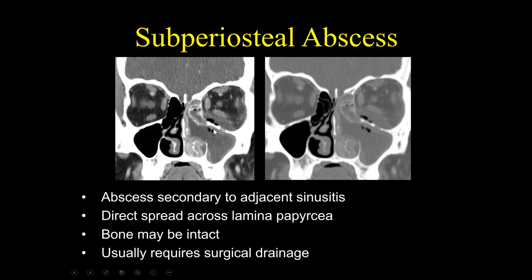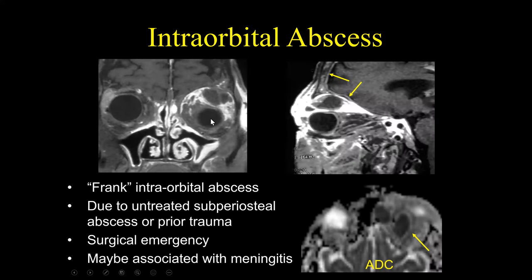This was a subperiosteal abscess arising from acute sinusitis of the maxillary sinus — a large subperiosteal abscess involving the floor of the left orbit, with air associated. If this continues to progress, it can develop into a frank intraorbital abscess — the fourth stage of the Chandler classification. We can almost see the three-globe sign: a globe on the right, a globe on the left, and a fluid collection in the superior orbit. An intraorbital abscess is due to untreated subperiosteal abscess or prior trauma and is a surgical emergency. ADC mapping shows decreased signal confirming the abscess, and sagittal T1 images show diffuse enhancement involving the meninges — this is an intraorbital abscess associated with meningitis.